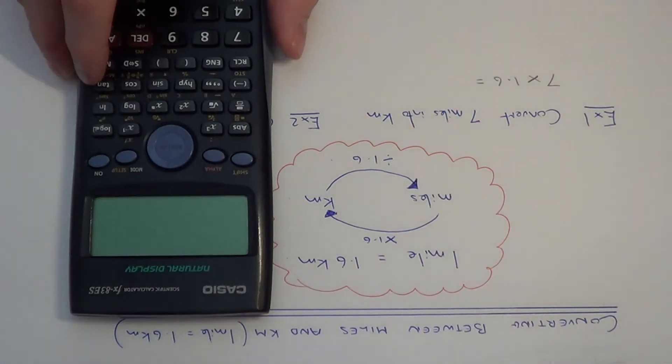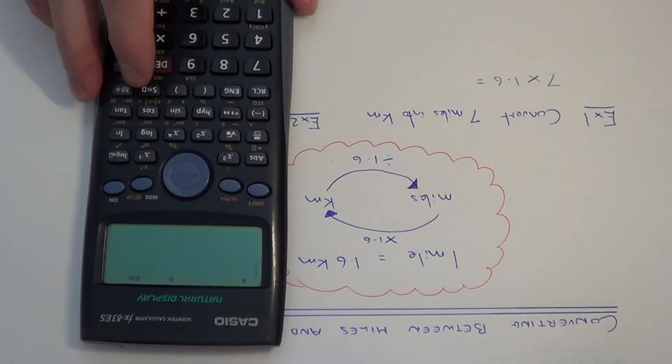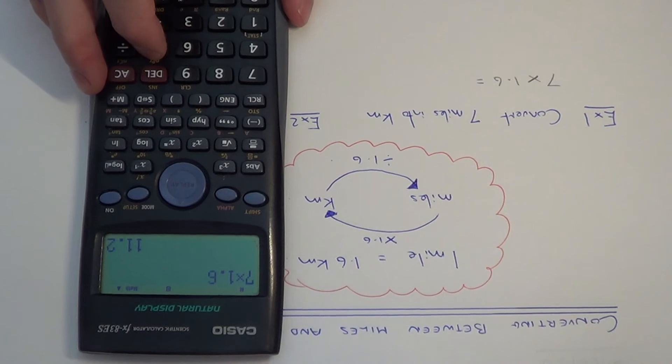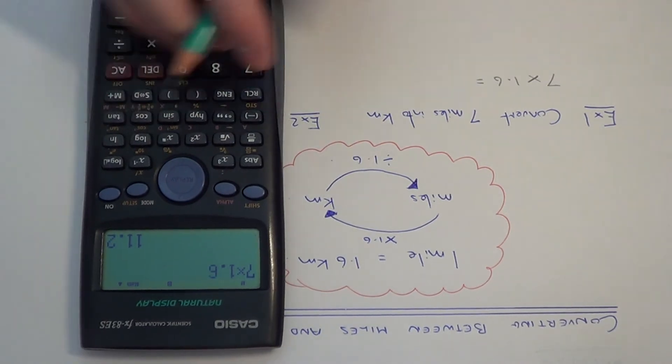So if you put this on your calculator 7 times 1.6 this gives an answer of 11.2.